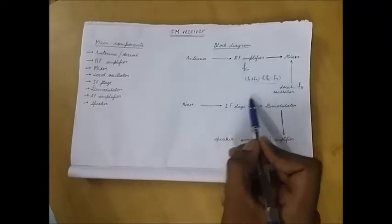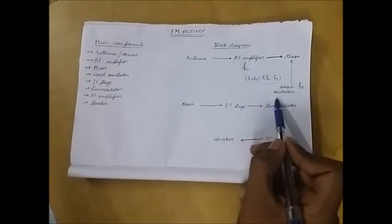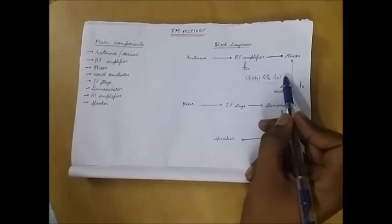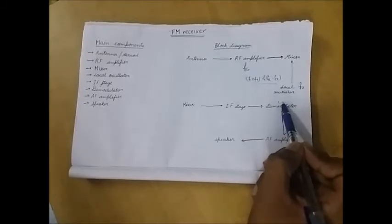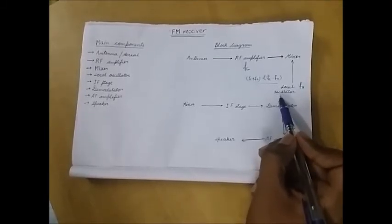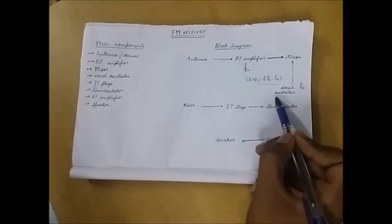First I will also explain the local oscillator. Local oscillator is basically an LC circuit which provides input to the mixer. It is controlled by the user using a variable capacitor so that we can tune it into different stations.